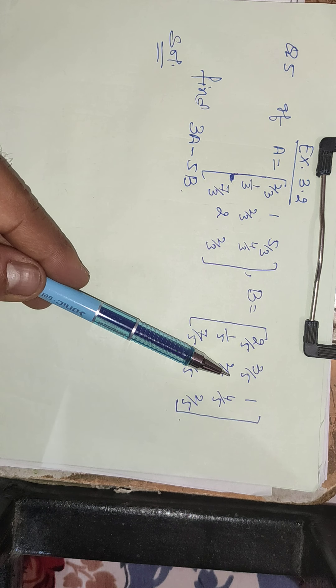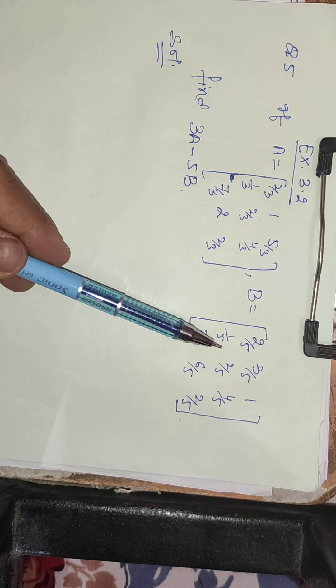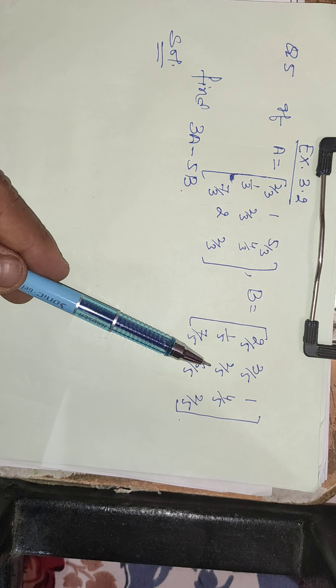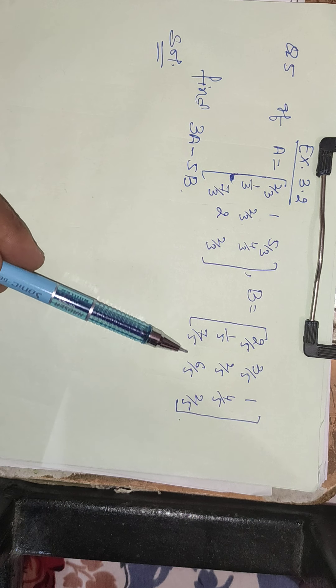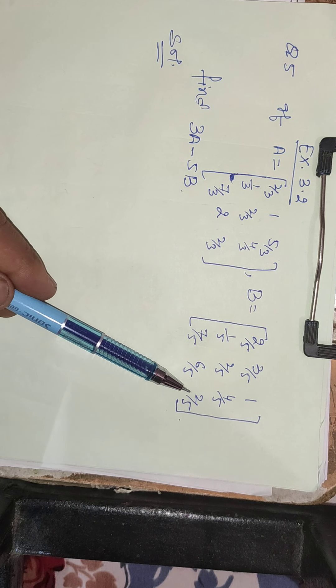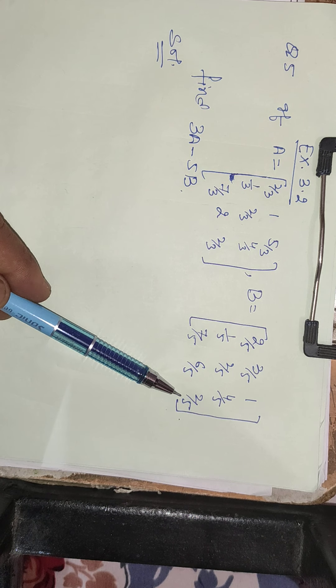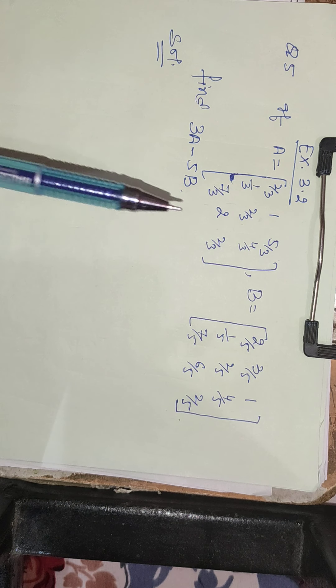Matrix B has values: 2/5, 3/5, 1, 1/5, 2/5, 4/5, 7/5, 6/5, and 2/5.